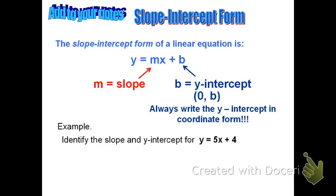Here's an example. Given the equation y equals 5x plus 4, identify the slope and y-intercept. The slope is the coefficient of x, the number in front of it, so the slope is m equals 5. The y-intercept is the constant, the plus 4. Therefore, the y-intercept is the coordinate zero comma four.